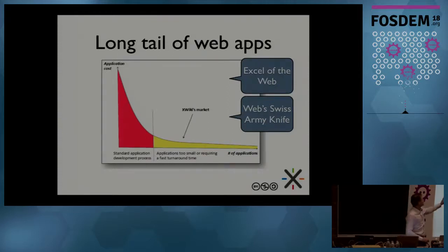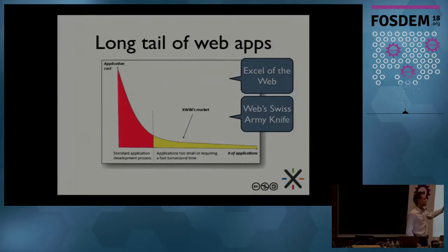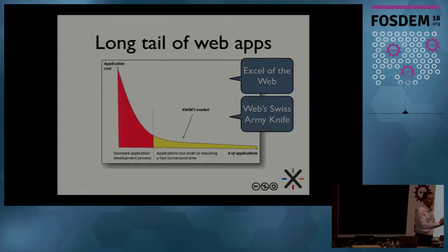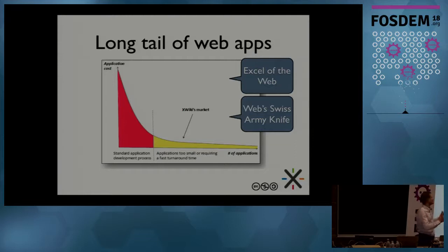If you look at the red part on the graph, if you're talking about bookstores, that would be the traditional bookstores — the physical, brick and mortar ones. Horizontally, you would see the number of books available in those bookstores. You have only a few number of books there, but they are best sellers, so you sell a lot of them.